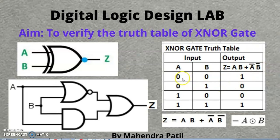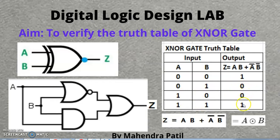If you put zero-zero, you get zero·zero which is zero for the first term, and zero-complement·zero-complement which is one·one, so it becomes one. The final answer is zero plus one, which gives output one. If you put all the other input combinations you will get the outputs as zero, zero, and one.